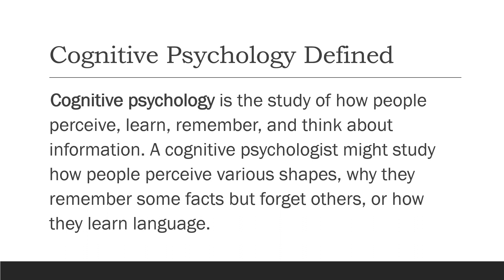First, let us define what cognitive psychology is. Psychology has a lot of subfields such as social psychology, abnormal psychology, biological psychology, and many more. But for this semester, we're going to talk about cognitive psychology. Just like other fields in psychology, this field is connected to other fields as well. Cognitive psychology is the study of how people perceive, learn, remember, and think about information.